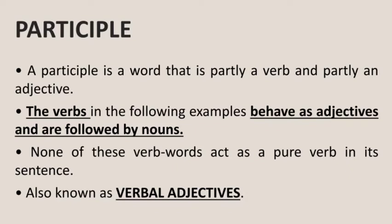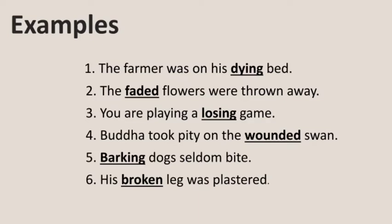The verbs in the following examples behave as adjectives and are followed by nouns. For example: 'The farmer was on his dying bed' — here the participle 'dying' acts as an adjective and is followed by the noun 'bed.' In example 2: 'The faded flowers were thrown away' — 'faded' is a participle behaving like an adjective for the noun 'flowers.' In example 3: 'You are playing a losing game' — 'losing' acts partly as a verb and partly as an adjective, following the noun 'game.' So it is a participle.